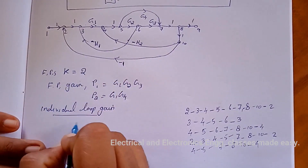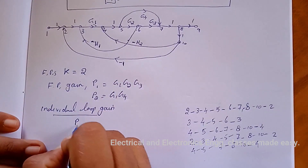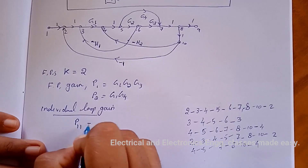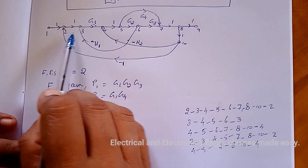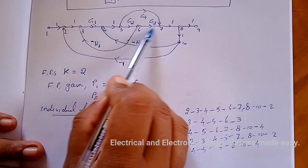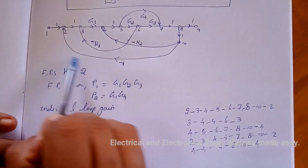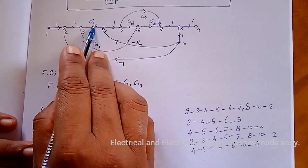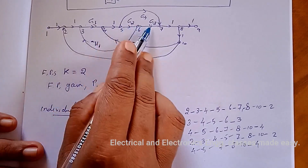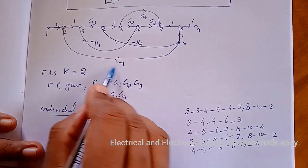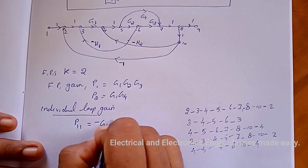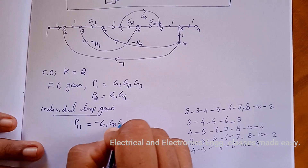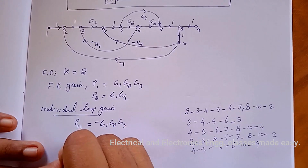The first individual loop gain is P11. Starting from loop 1 going through G1, G2, G3 and the unity negative feedback, P11 = G1·G2·G3 × (−1) = −G1·G2·G3.